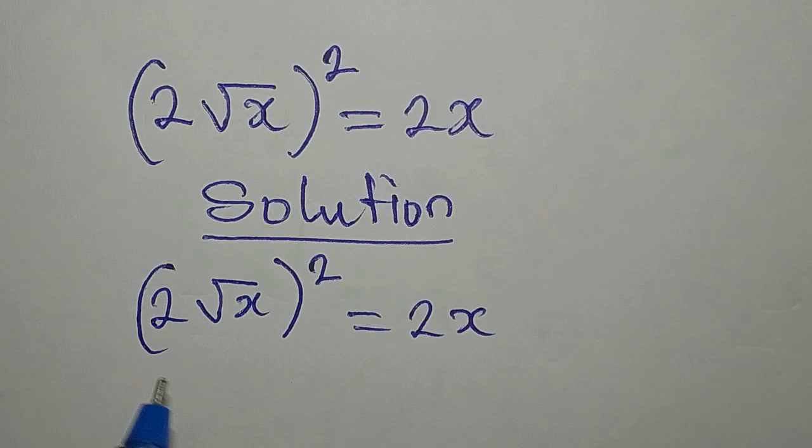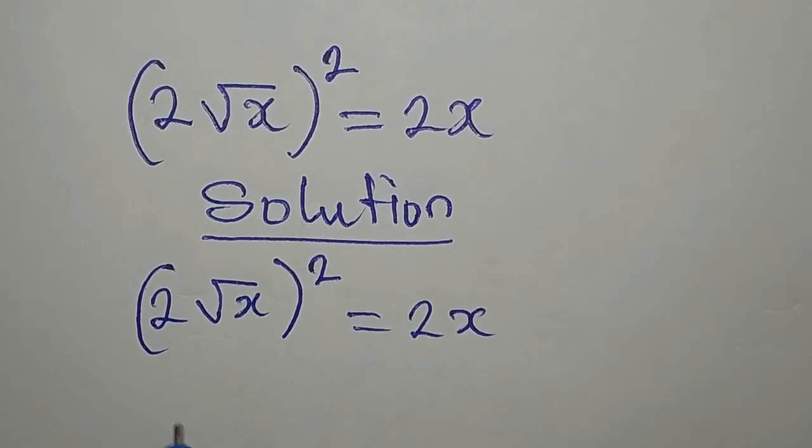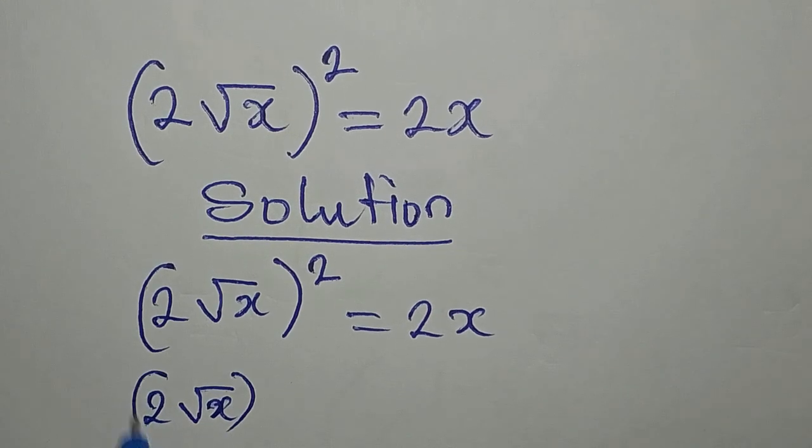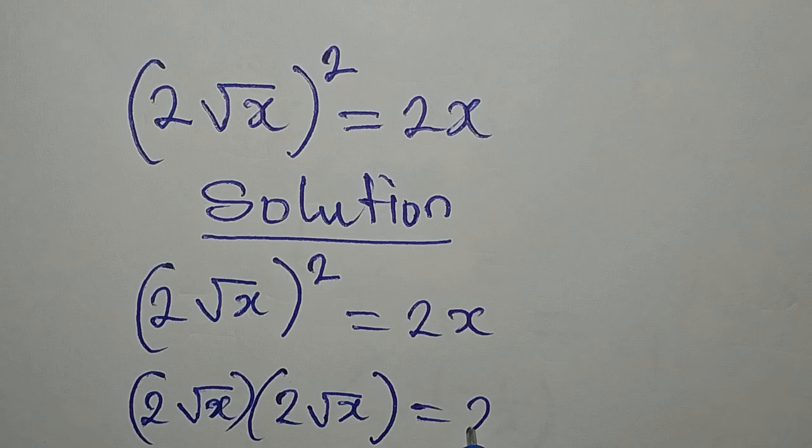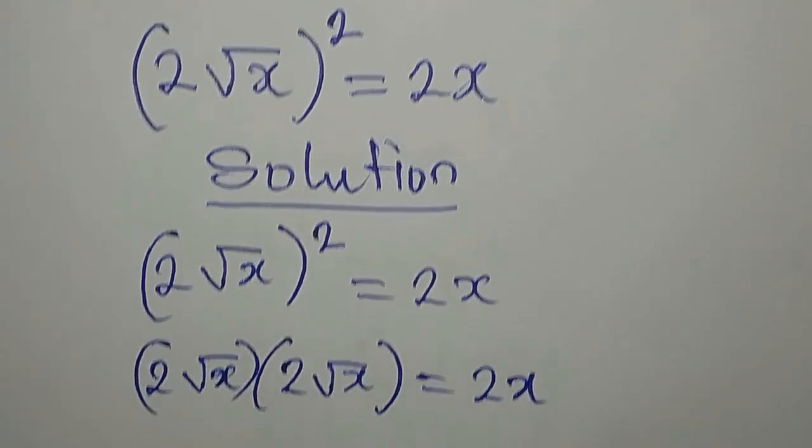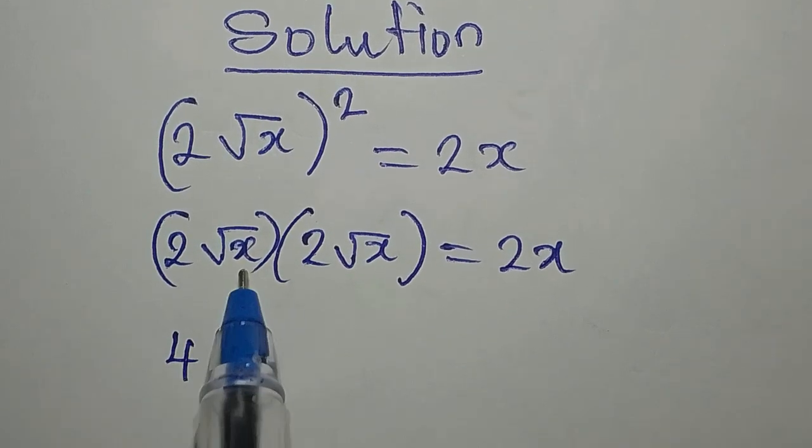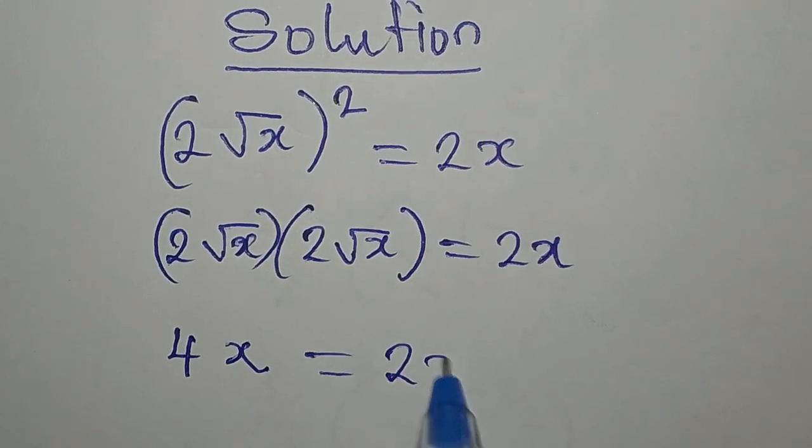Mind you, this has to be expanded before we can proceed. So we have 2 root x into 2 root x, and then this is equal to 2x. Now 2 times 2 will give us 4, root x times root x will give us x, and this is equal to 2x.